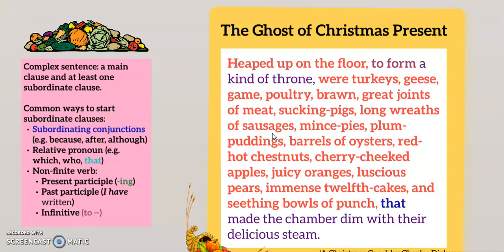Step two: look for the main clause and, as we can see, it's in red and incredibly long. Dickens has split it and dropped in the first subordinate clause. This embedded subordinate clause is separated with commas and, with the main clause, Dickens deliberately uses listing to show how much food there is. Step three is to look at where the clauses are placed. The first subordinate clause, 'to form a kind of throne,' as we've seen, is embedded. This provides information about the food before we read the list.